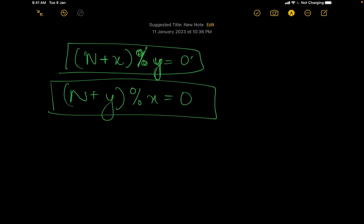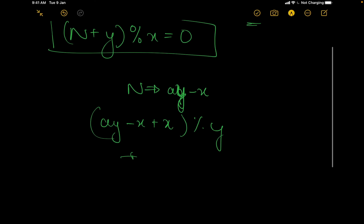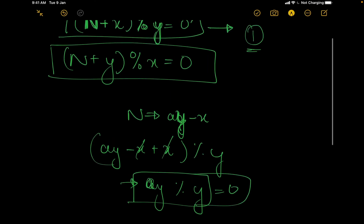Now, if my n can be represented in the form ay minus x, then my first equation would be satisfied. Because if I put ay minus x plus x mod y, then it becomes ay mod y. Since a is an integer and there is a multiple of y, so ay mod y is definitely equal to 0. My first equation is satisfied.